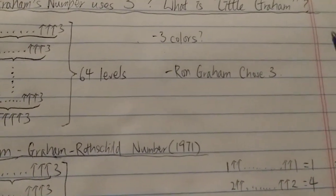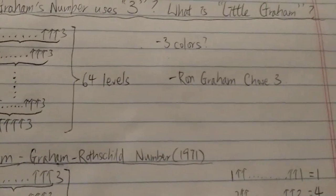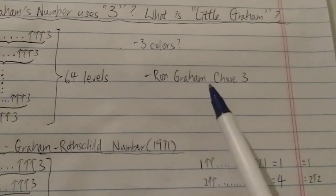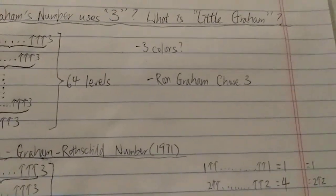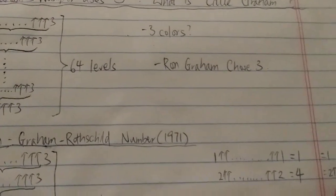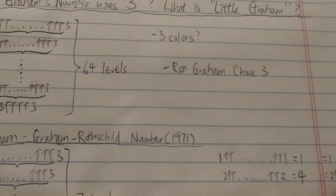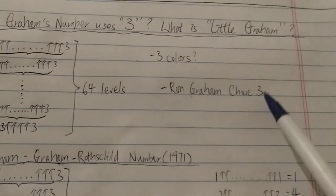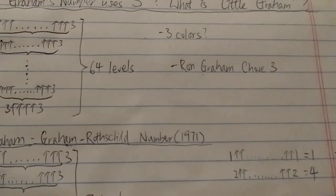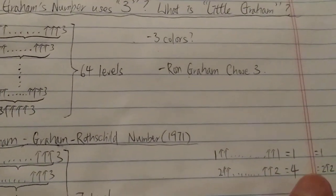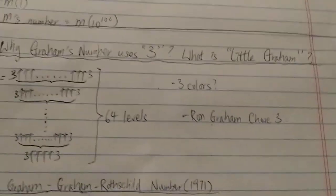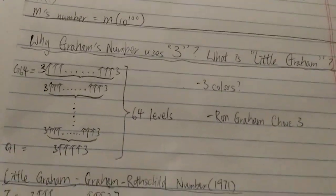The actual reason is that Ron Graham simply chose 3 because he wanted to use 3. That's the real reason — and this is not a joke. So you could argue that the Graham's number most people know today is actually a made-up number.